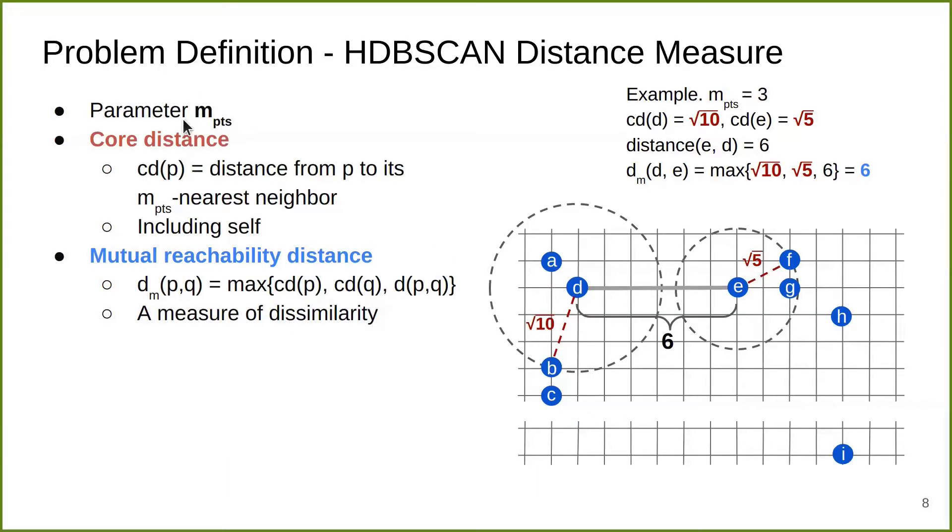The HDBSCAN problem takes in one parameter, m. In the example I'm going to show on the right, I use m equals 3. First, I define core distance. The core distance of a point p is defined as the distance from p to its mth nearest neighbor, including p itself. In the example, I'm going to use E. E's third nearest neighbor, including E itself, is F, from which E has a distance of square root of 5. Therefore, E has a core distance of square root of 5.